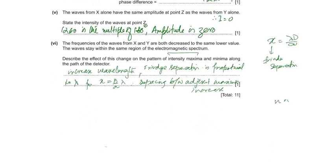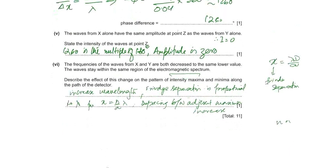A is the path difference over X and X is the fringe separation. If D and A is constant, then lambda means wavelength is directly proportional to the fringe separation. Lambda increases, fringe separation, distance between the two adjacent maxima increases.